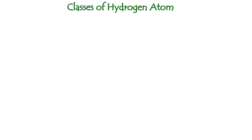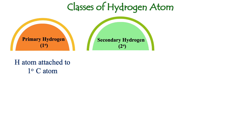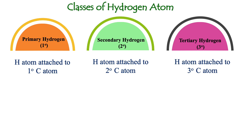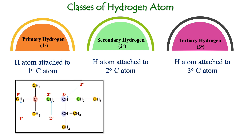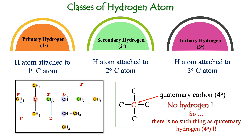Next, let's look at the classes of hydrogen atoms. Primary hydrogen is a hydrogen atom attached to a primary carbon atom. Secondary hydrogen is a hydrogen atom attached to a secondary carbon atom. Tertiary hydrogen is a hydrogen atom attached to a tertiary carbon atom. In general, the class of a hydrogen atom follows the class of the carbon atom it is bonded to. If a carbon atom is attached to four other carbon atoms — a quaternary carbon — it has no hydrogen, so there is no such thing as quaternary hydrogen.